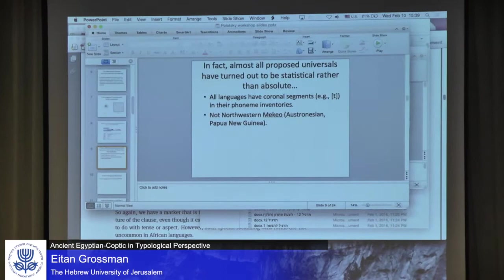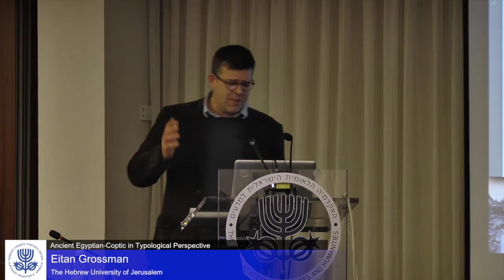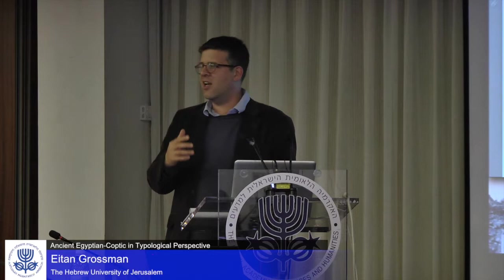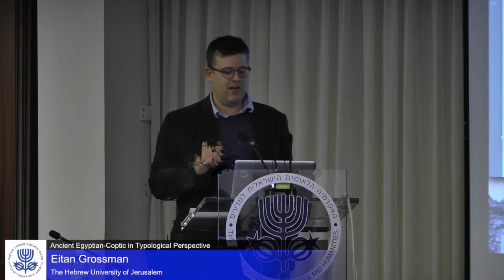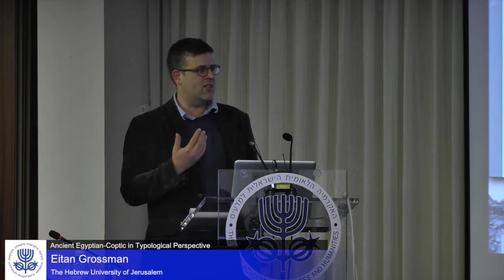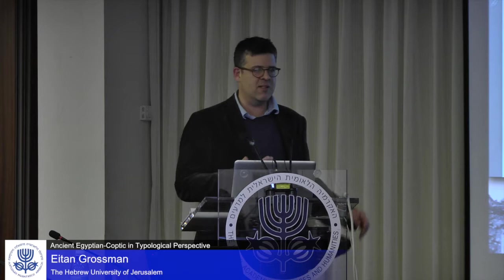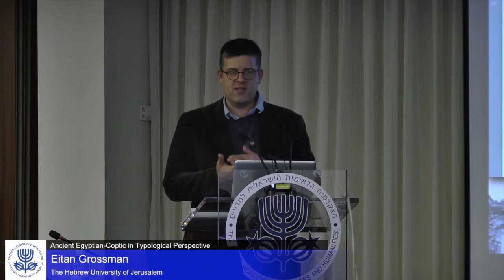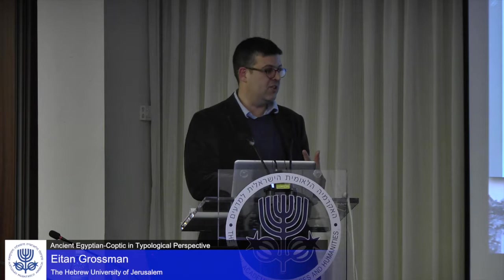Almost all proposed universals of language have turned out not to be absolute, but rather statistical — tendencies of varying strengths. Up until 2008, it was possible to say all languages have some sort of coronal segment in their phoneme inventory. But then Juniette Blevins showed that Northwestern Mekeo, an Austronesian language of Papua New Guinea, has no coronal segment. This tells us something about what's really a learnable and transmissible language, and pushes us toward functional, usage-based, historical explanations rather than biological ones.